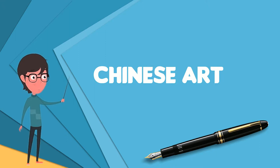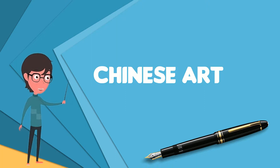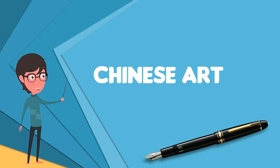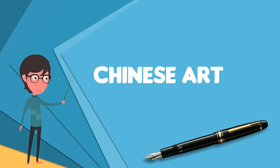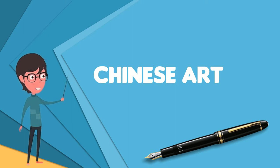Early Stone Age art dates back to 10,000 BC, mostly consisting of simple pottery and sculptures. After this early period, Chinese art, like Chinese history, is typically classified by the succession of ruling dynasties of Chinese emperors, most of which lasted several hundred years.